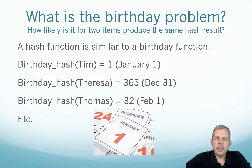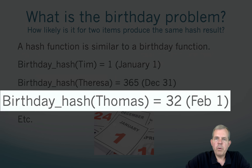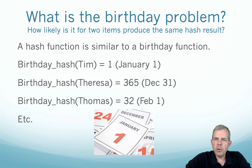This possibility is related to something called the birthday problem. The question is: how likely is it for two items to produce the same hash result? It's really the same question as asking: in a room full of 30 people, what is the likelihood that two of those people share a birthday — not necessarily January 1st, but any two sharing the same date? A birthday is like a hash. 'Birthday hash Tim' — Tim was born on January 1st. 'Birthday hash Teresa' — she gives 365 because she was born on the last day of the year. 'Birthday hash Thomas' — Thomas was born on February 1st, so we give him number 32. There are 365 possible results and everyone maps to one of those dates, so you can see it would be possible for two people to share the same birthday.